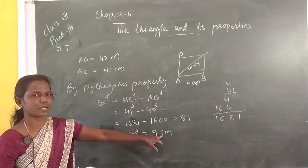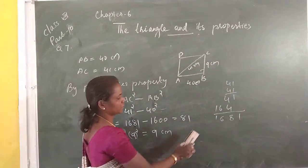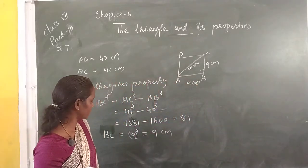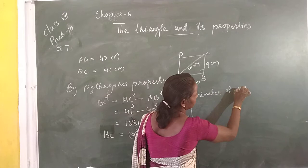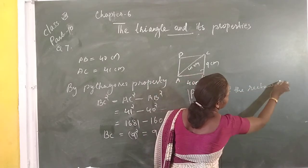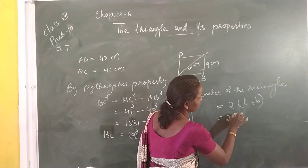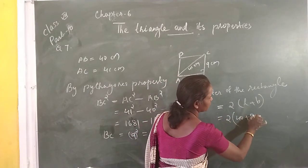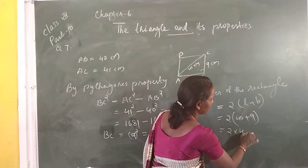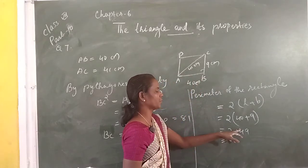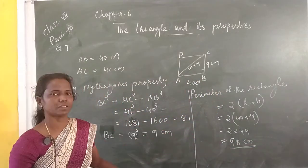So BC is equal to 9 centimeters. Then, the perimeter of the rectangle is equal to 2 × (L + B) = 2 × (40 + 9) = 2 × 49 = 98 centimeters. So the perimeter of this rectangle is 98 centimeters.